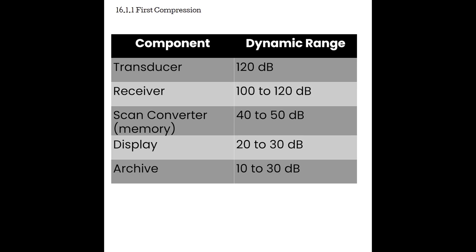By the time we are printing pictures on that little thermal printer connected to the machine, we're taking signals that can reach up to a trillion in differences down to tens, hundreds, or thousands of differences. This is why dynamic range has to be reduced and why compression occurs. As those signals are processed, we don't want to lose information about the strongest or weakest signal, so we need to compress them together — make their differences less drastic without losing the hierarchy of strength. Through compression, we make sure each system component does not introduce any errors into the image.